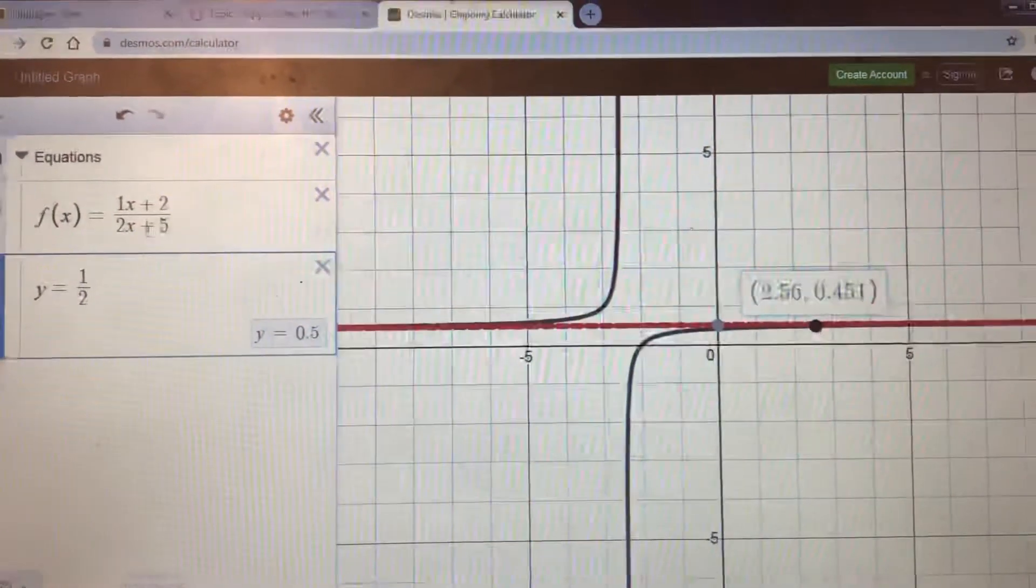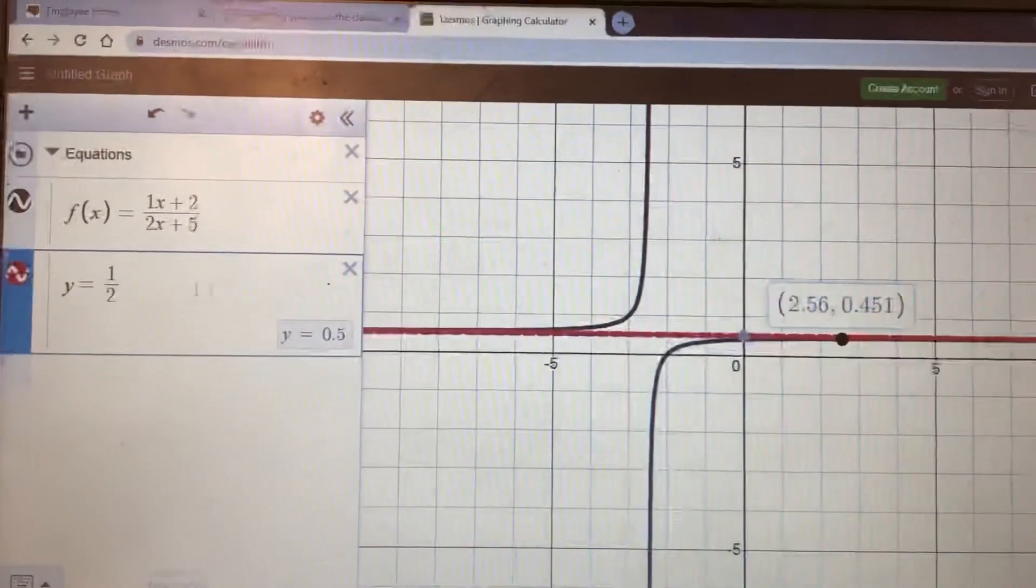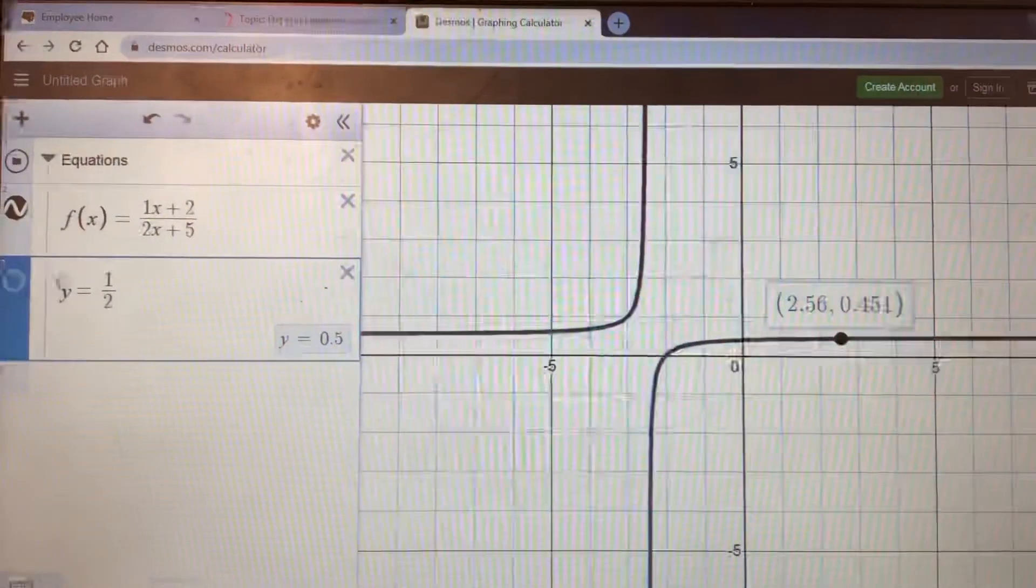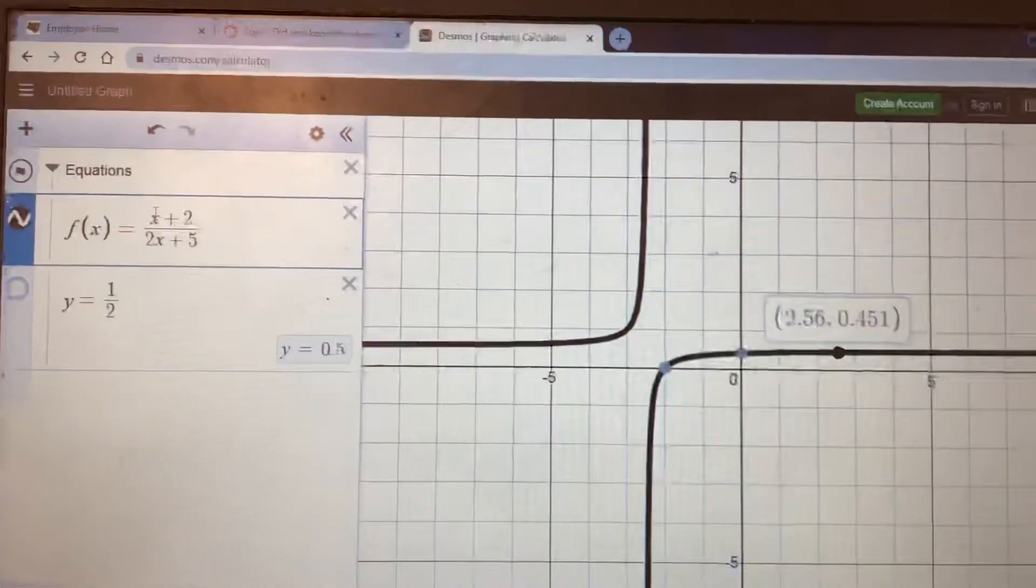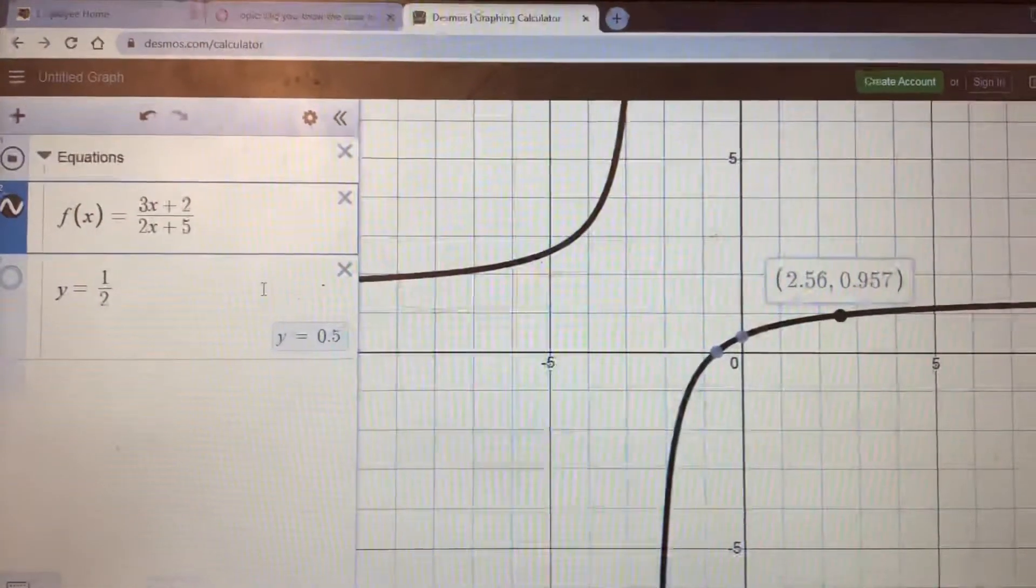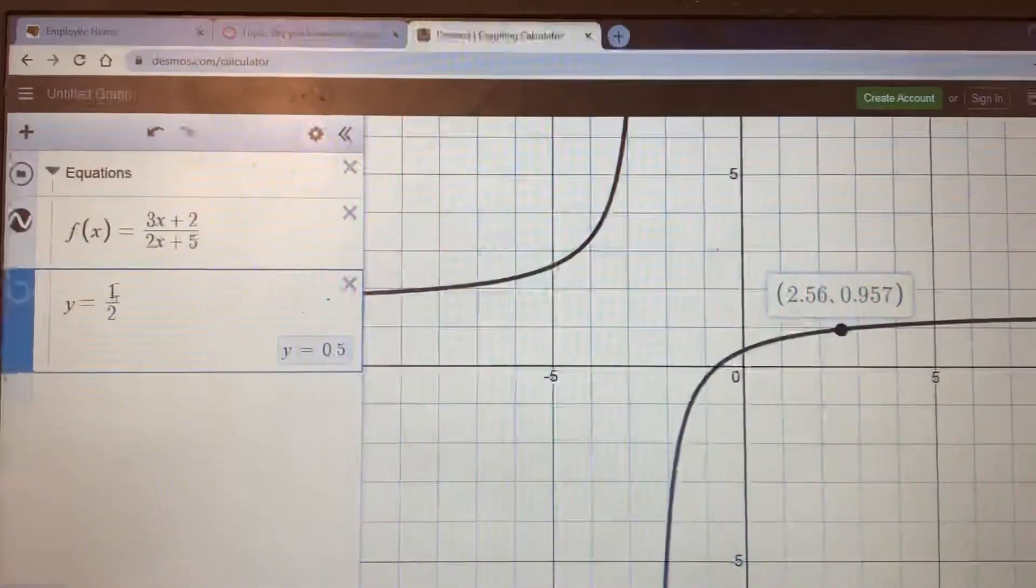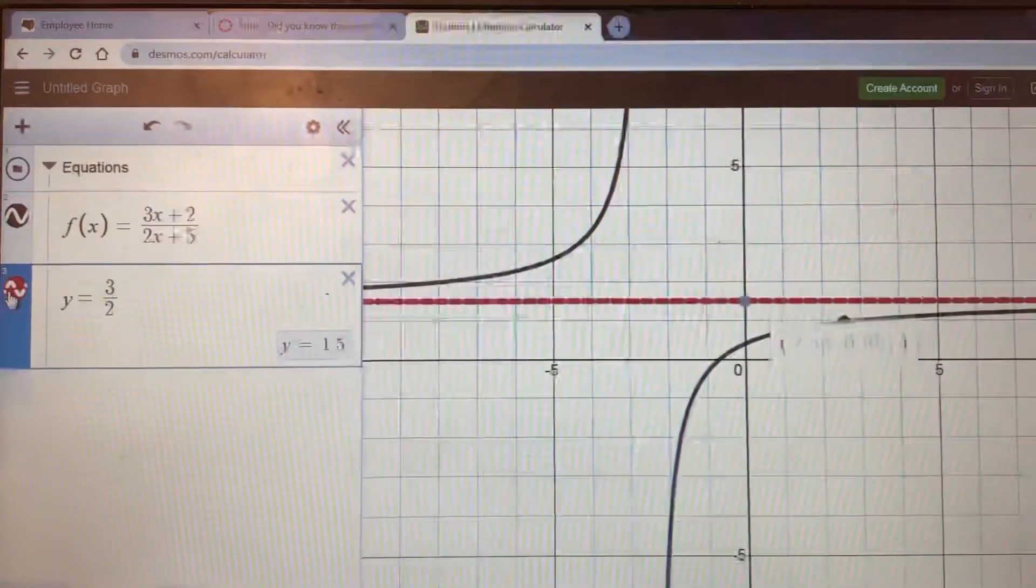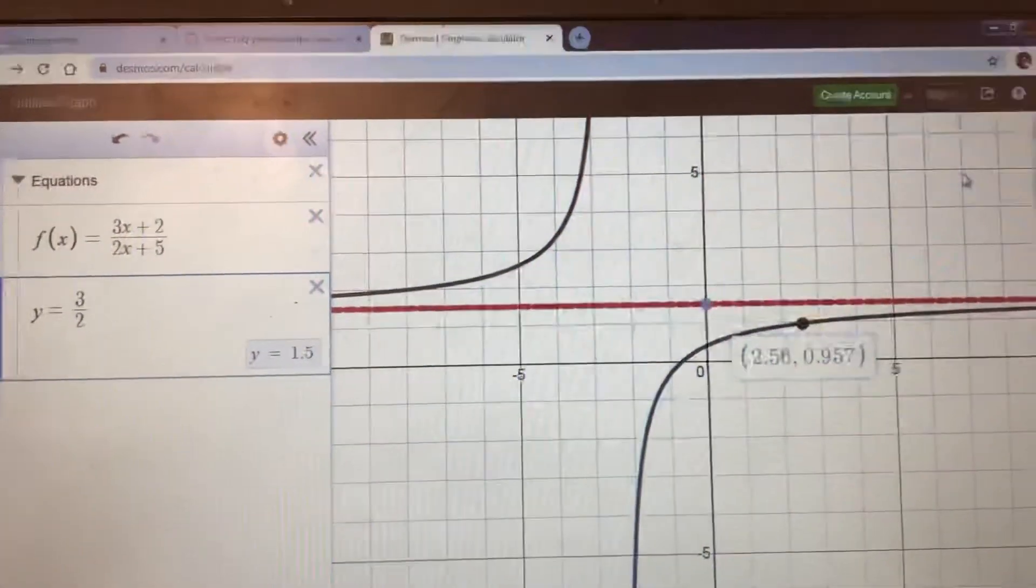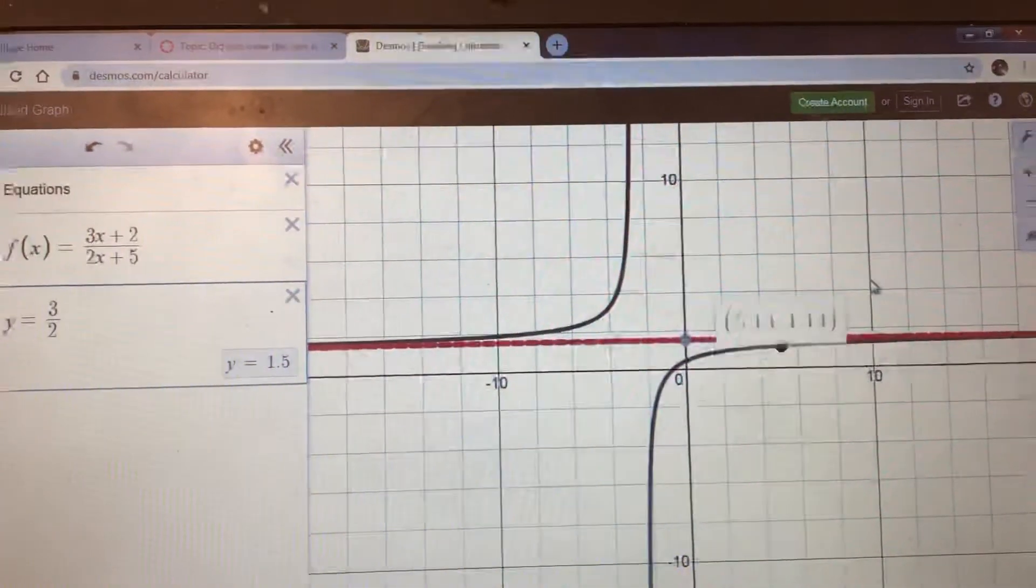So let's put this theory to the test. What if we were to change this one up here to a 3? Where would you expect the horizontal asymptote to be now? At three halves? Let's see if we're right. We're on to something here.